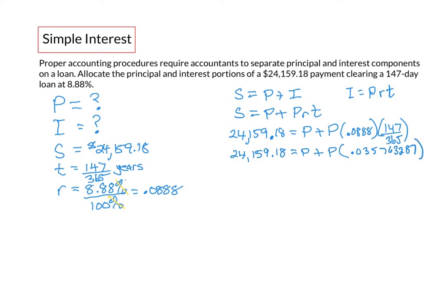Next we can add our P's together because these are like terms. We really have a 1P here plus this 0.03 etc P, so together that would equal 1.035763287P equal to our $24,159.18.